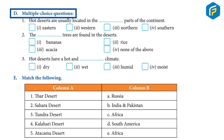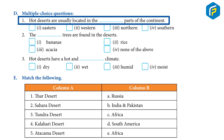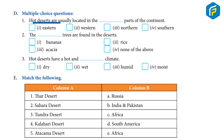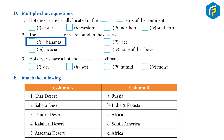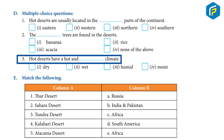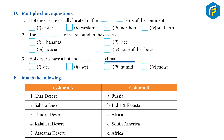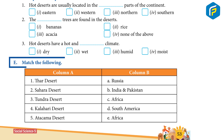D. Multiple Choice Questions: 1. Hot deserts are usually located in the dash part of the continent: Eastern, Western, Northern, Southern. 2. The dash trees are found in the deserts: Bananas, Rice, Acacia, None of the above. 3. Hot deserts have a hot and dash climate: Dry, Humid, Moist.